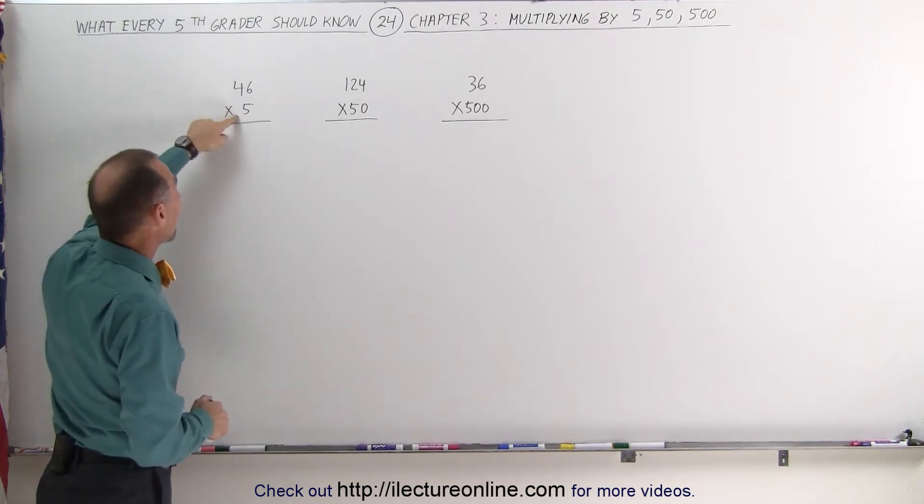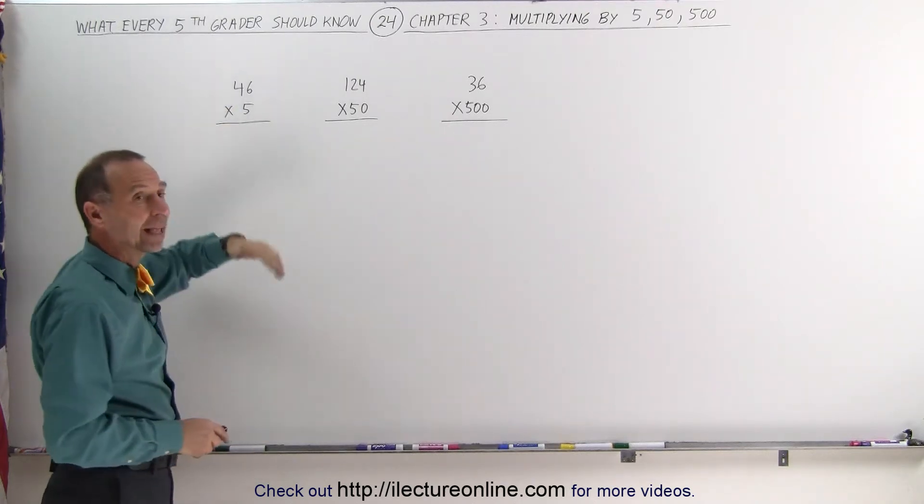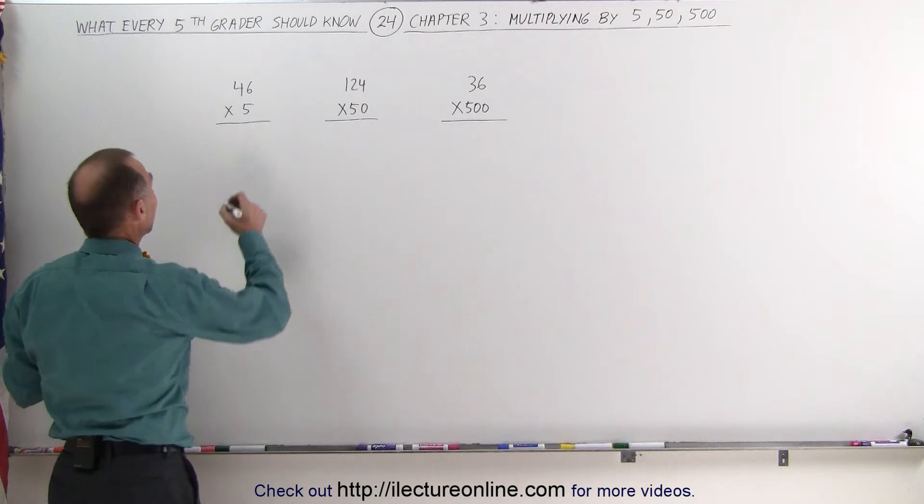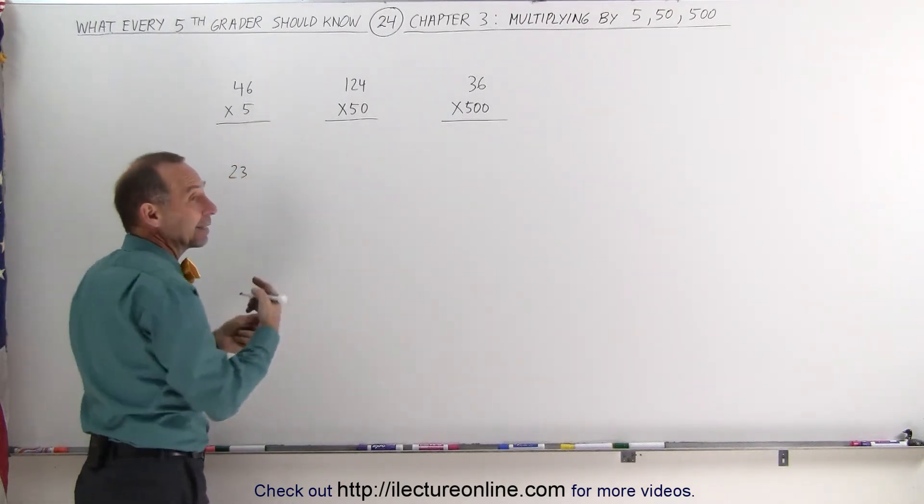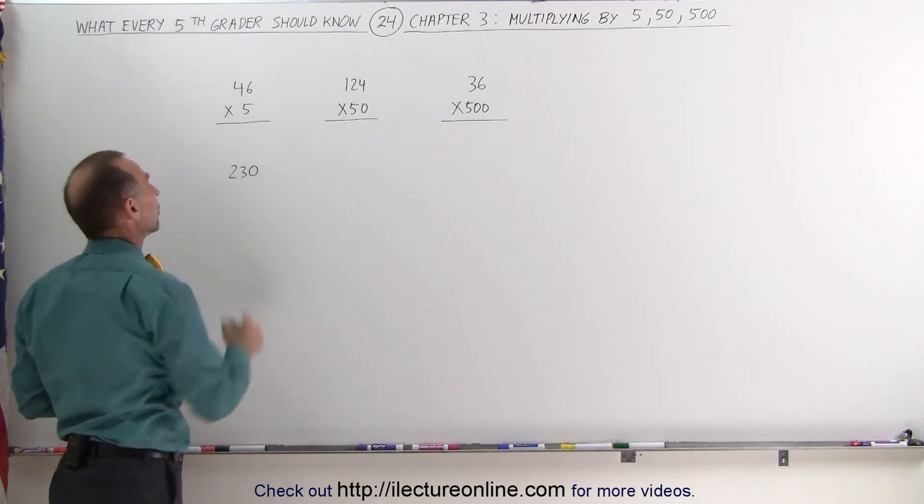When you have 46 times 5, first take 46 and divide by 2. When you divide by 2, we get 23. Then add a 0 because multiplying times 10 is like adding a 0. The answer is 230.